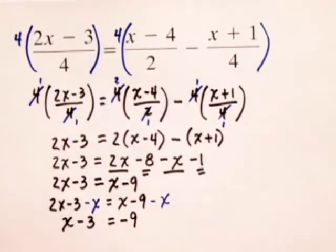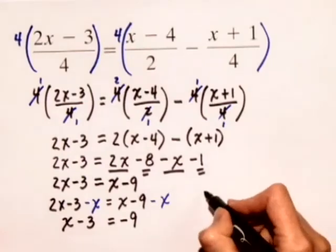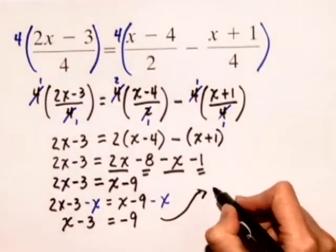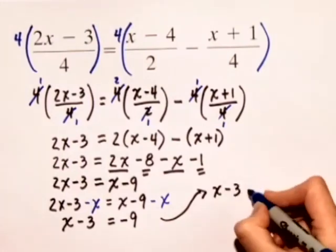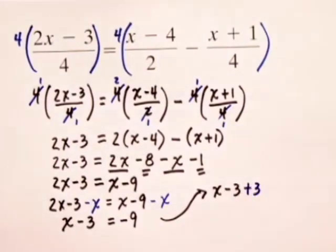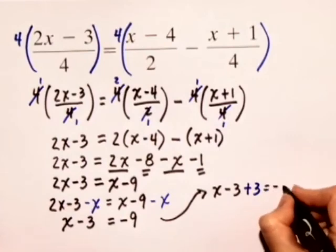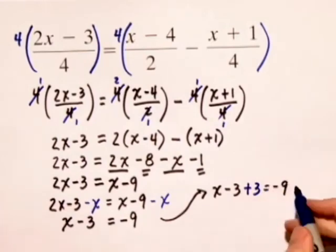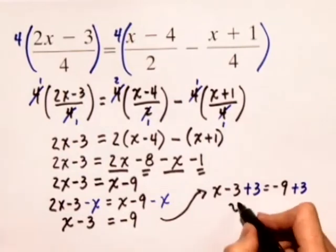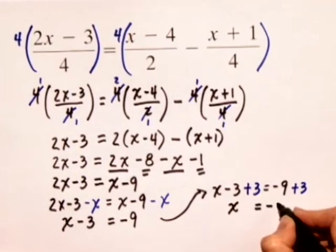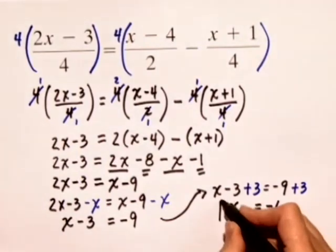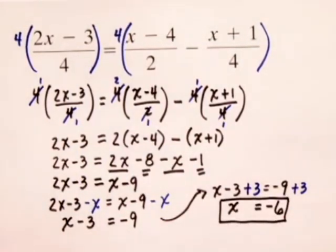The last step will be to add 3 to both sides. We have x minus 3 plus 3 is equal to negative 9 plus 3. And our final solution will be, on the left hand side, just x is equal to negative 9 plus 3 is negative 6. So the answer to this problem is x equals negative 6.